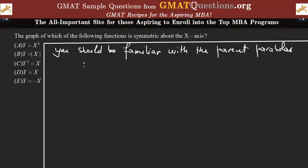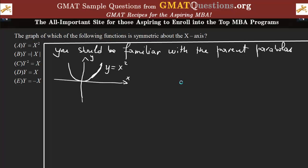When you have a graph, you have the x-axis and the y-axis. This is a sketch of the graph of y equals x-squared, which is a parent parabola. It's called parent because many of the parabolas come from this particular one. This is a vertical parabola that is concave up. And you also have another one that looks similar except it's concave down — that is the graph of y equals negative x-squared.